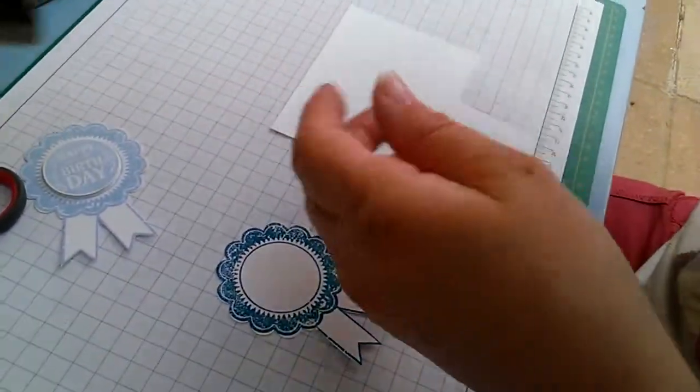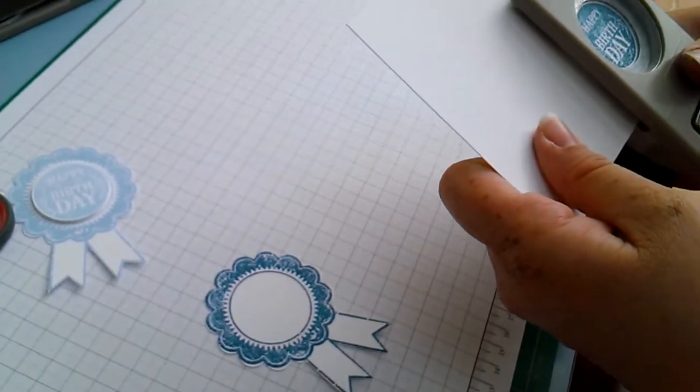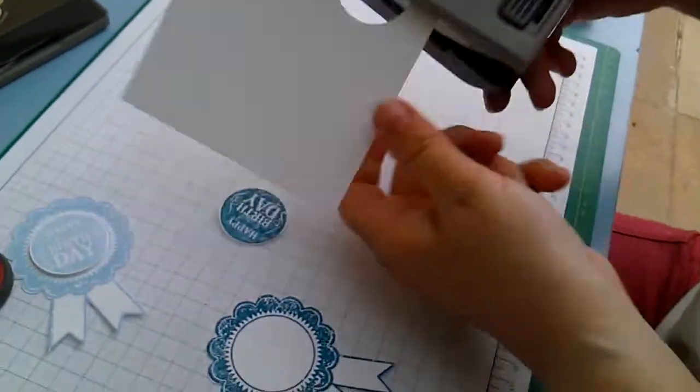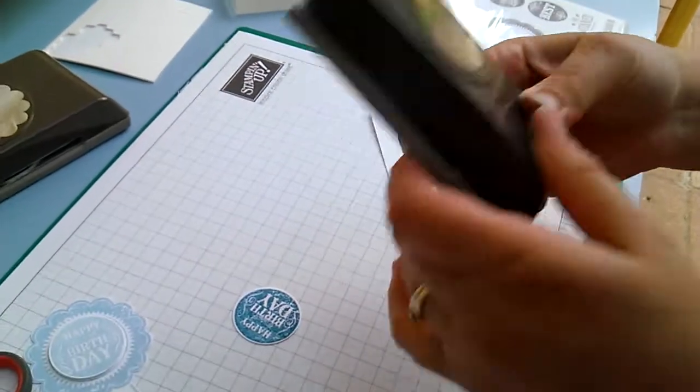Whilst I've cut that out, I'll also cut this piece out here. That's with the one and three quarter circle punch.